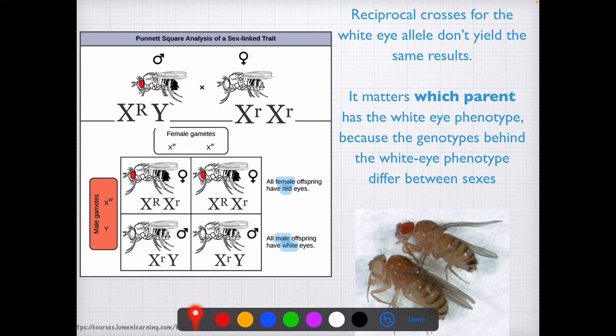Well, we can tell what the biological sex of the offspring might be and what eye color each biological sex might have. So for female gametes, or gametes produced by the female here, and the male gametes here, or gametes produced by the male or the father fly, this is the cross.